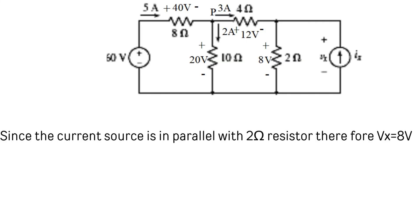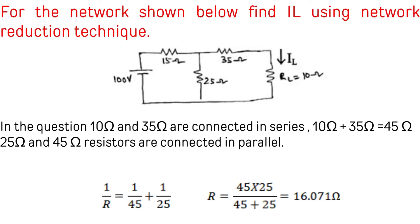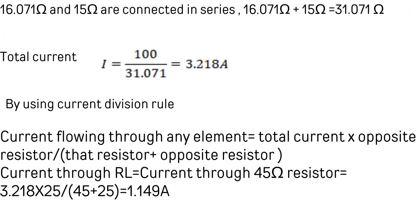Find IL using the network reduction technique. The 10 ohm and 35 ohm resistors are in series, giving 10 + 35 = 45 ohms. Now 25 ohms and 45 ohms are in parallel: 1/R = 1/45 + 1/25, giving R = 16.071 ohms. This is then in series with 15 ohms.